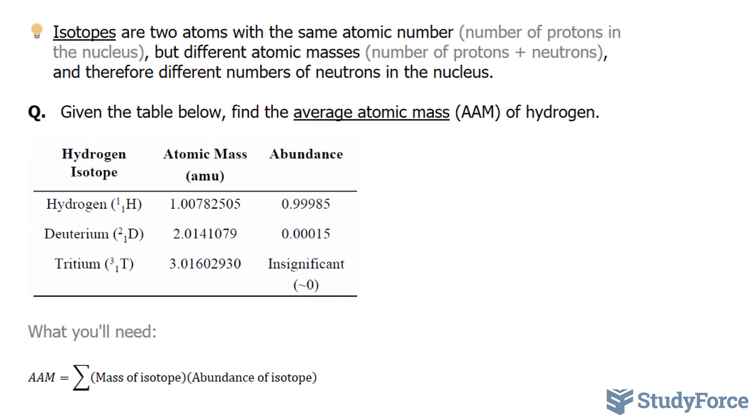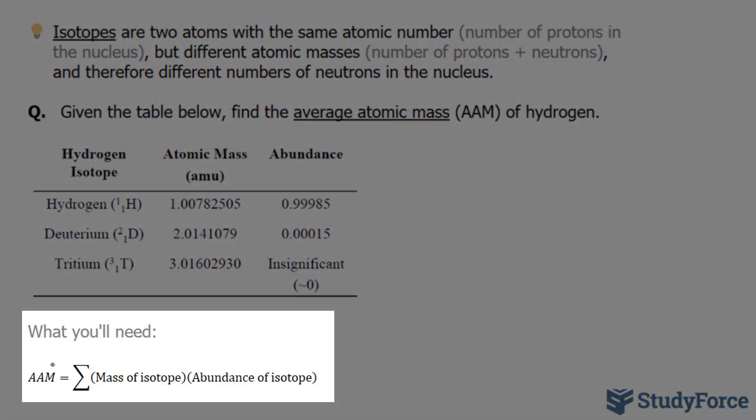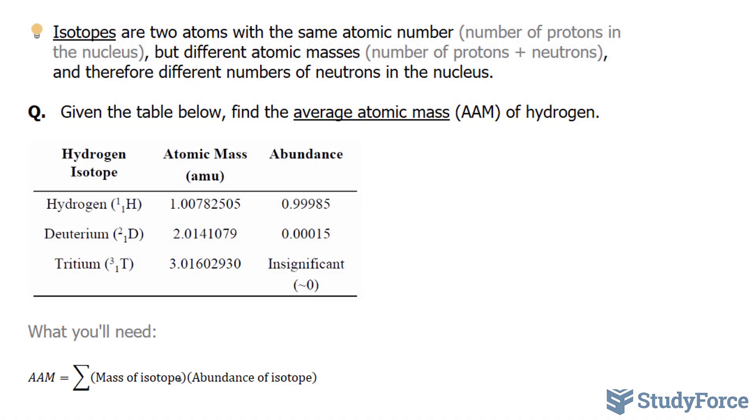Now what you'll need to be successful in this question is the following formula. The average atomic mass is equal to the sum of the mass of the isotope times the abundance of the isotope. Sometimes you'll be provided this number as a percentage, so it's your responsibility to convert it into decimal.